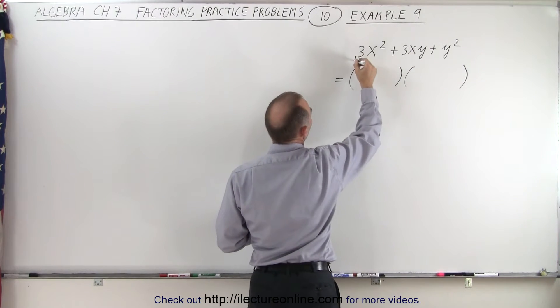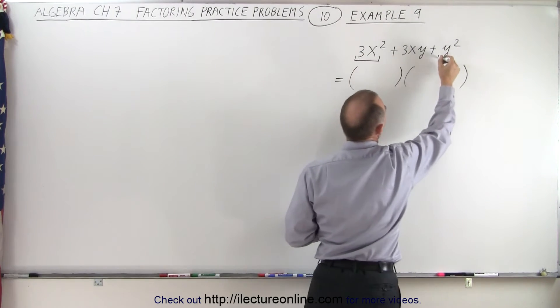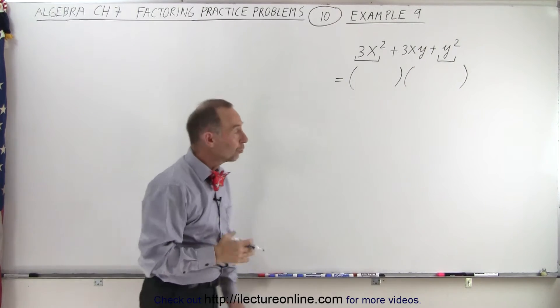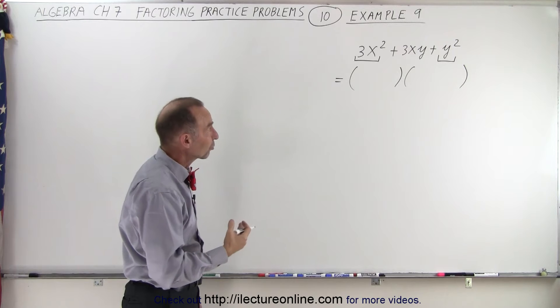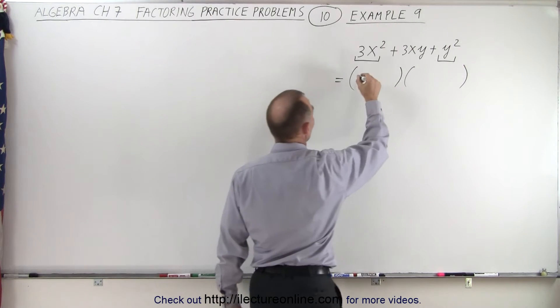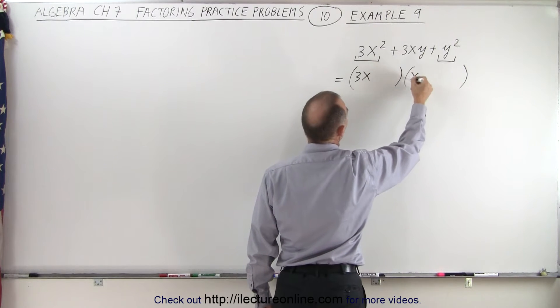Now what we're going to do is take a look at the first term and the last term. The first term, well, the two factors that will make up 3x squared are 3x and x. There's no option there, so let's go ahead and plot that down, a 3x and an x.